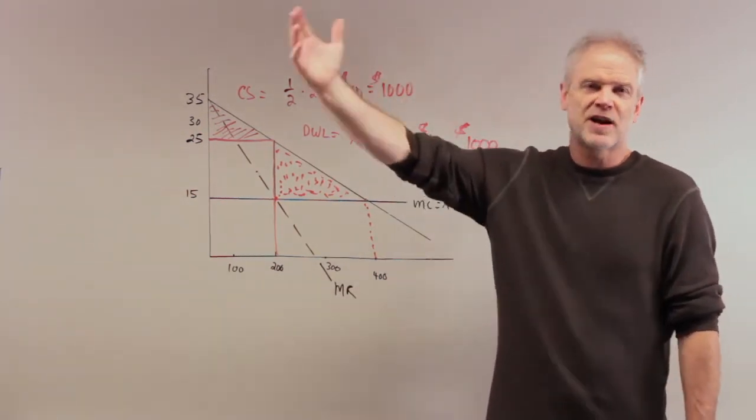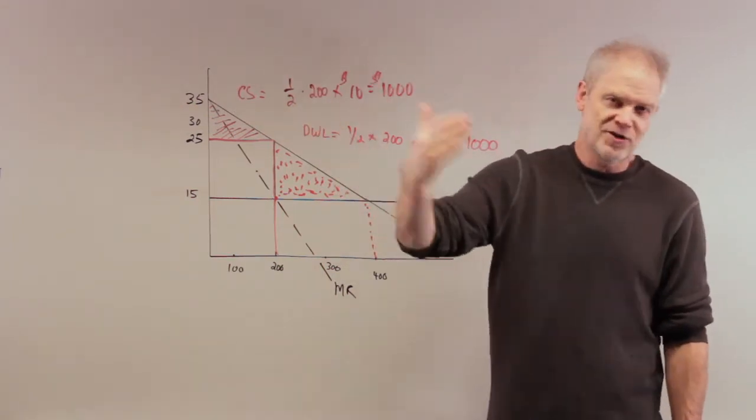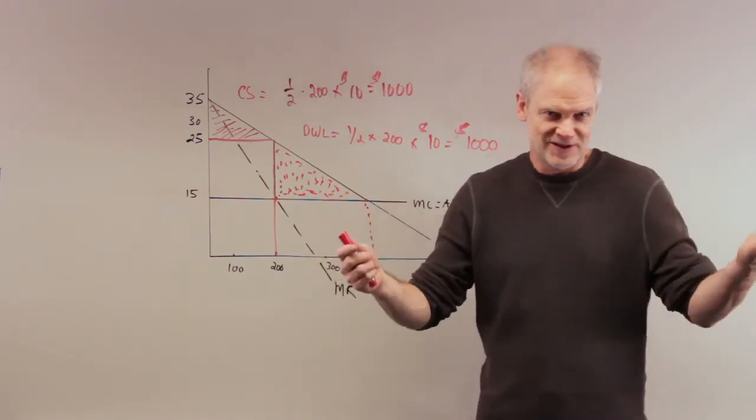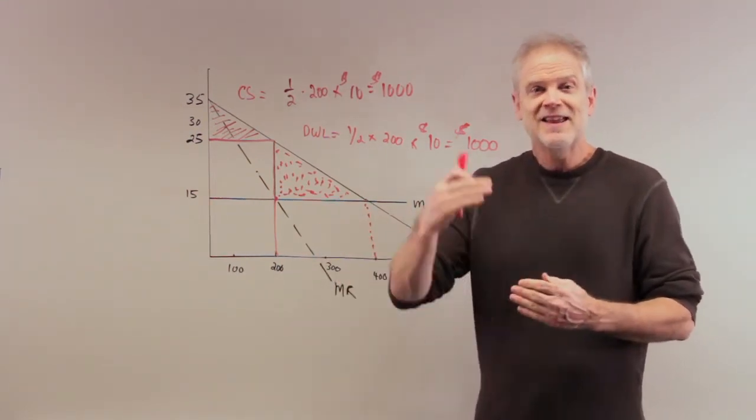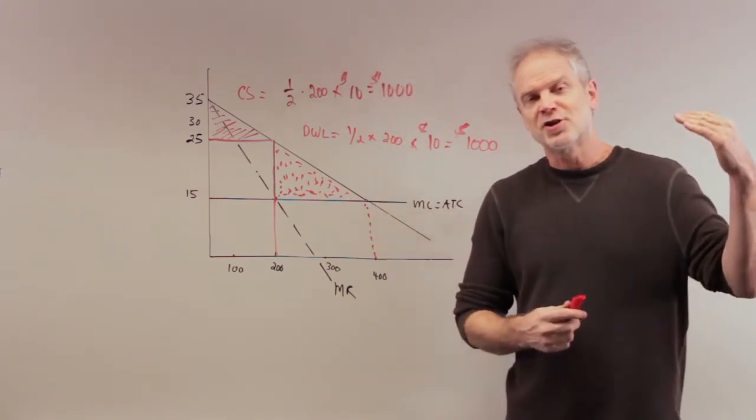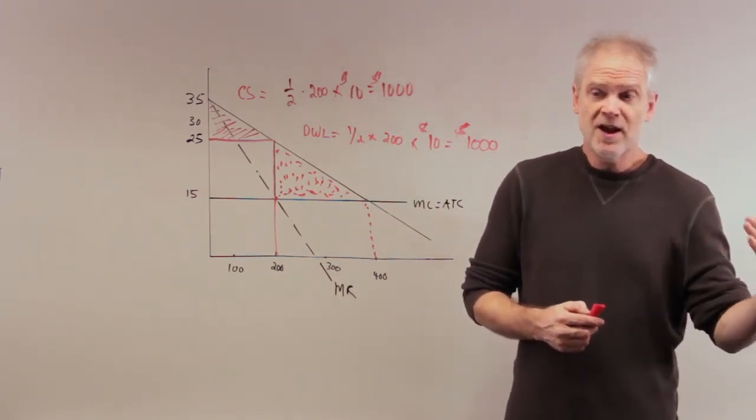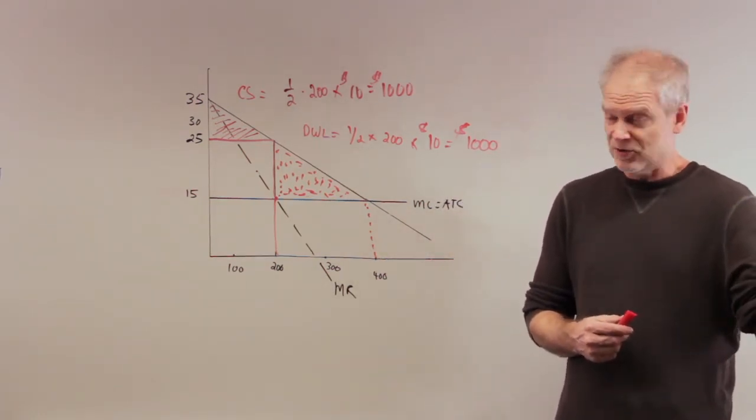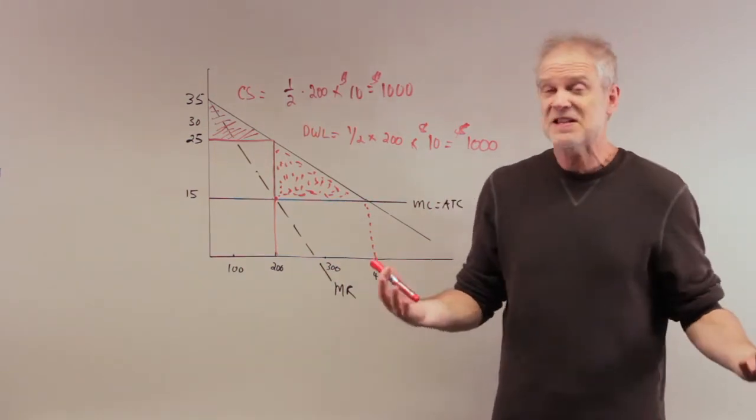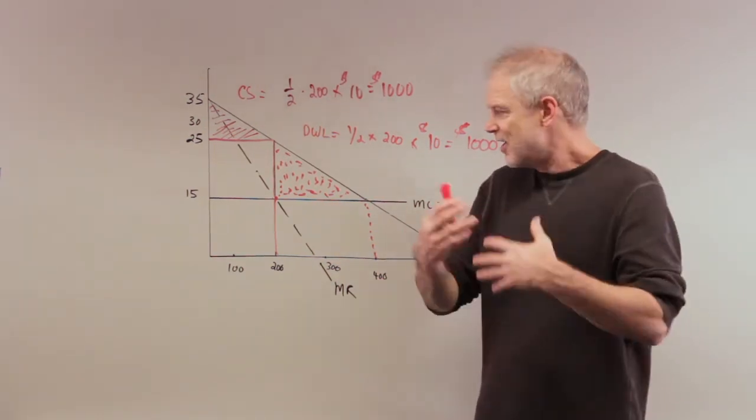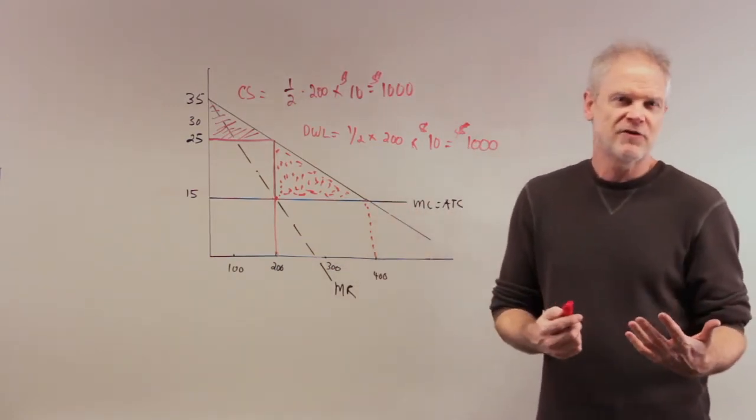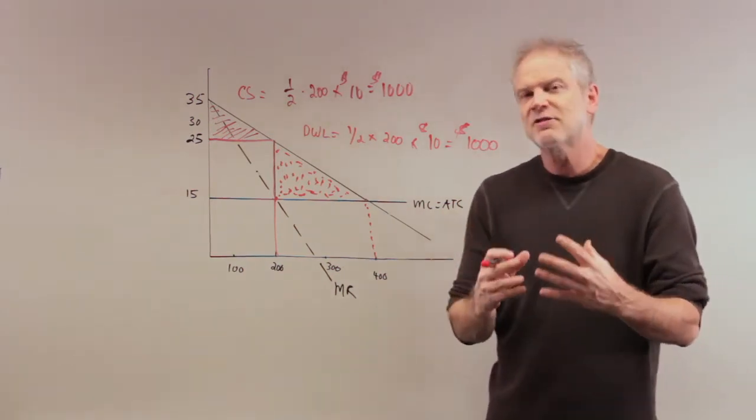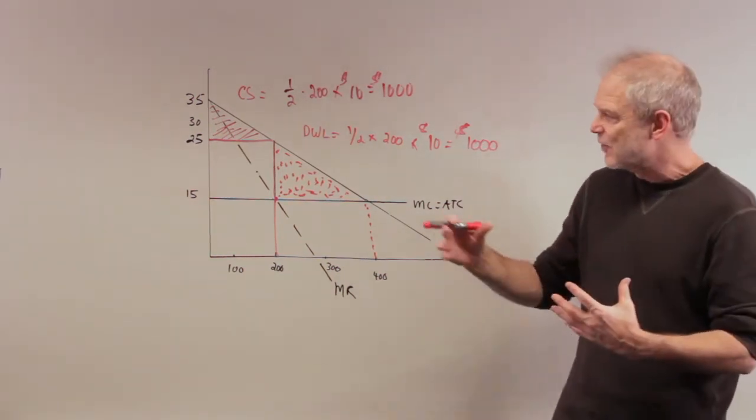Drug companies do it when they sell drugs at lower prices in Canada versus the U.S. They charge a lower price for Lipitor in Mexico because Mexico is not as rich a country. They'll get more people to consume Lipitor. The marginal cost of producing more Lipitor is minimal once they've made the discovery. Price discrimination is extremely profitable, but to be successful you have to be able to segment the markets. You can't let people go to Mexico, buy lots of drugs, and bring them back.